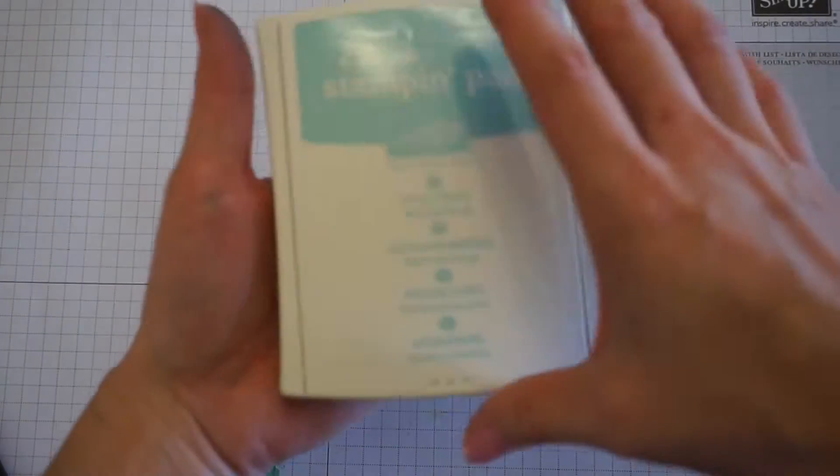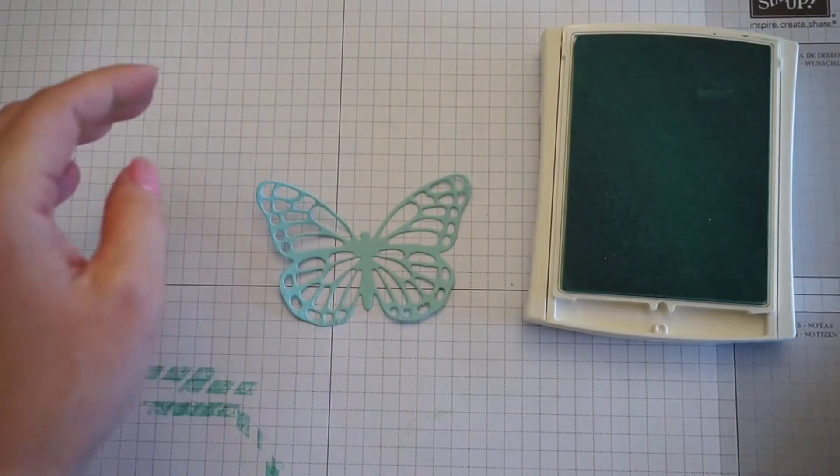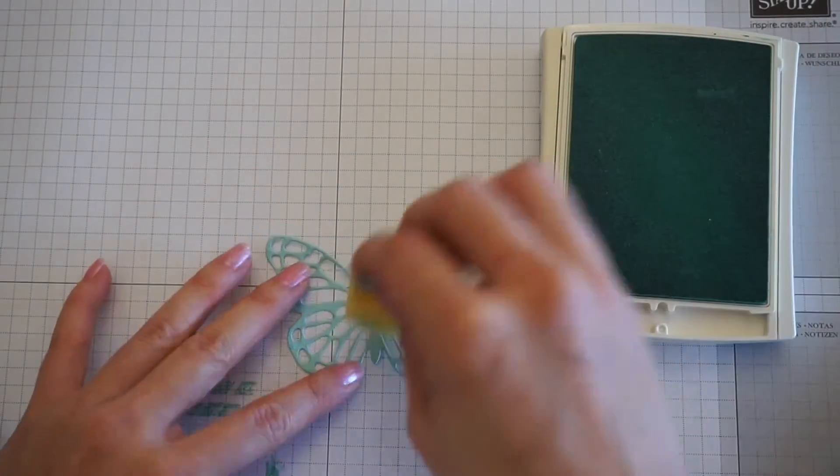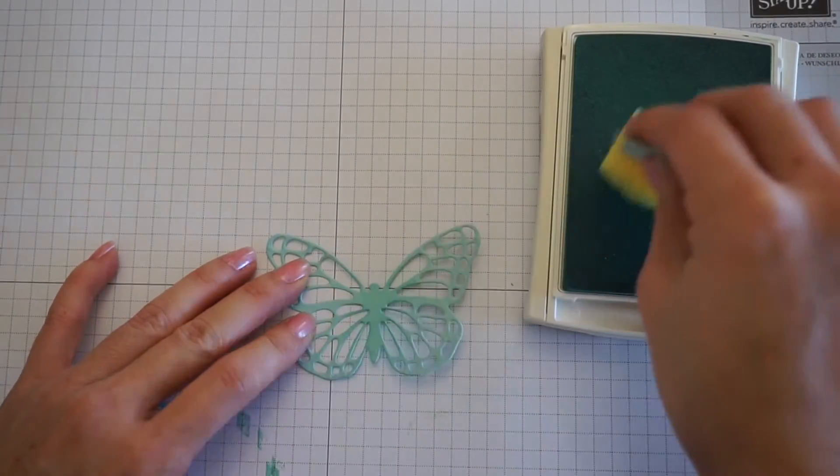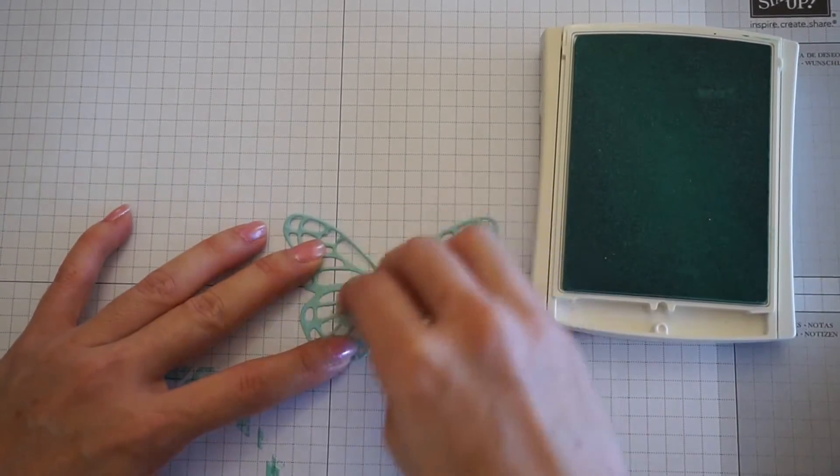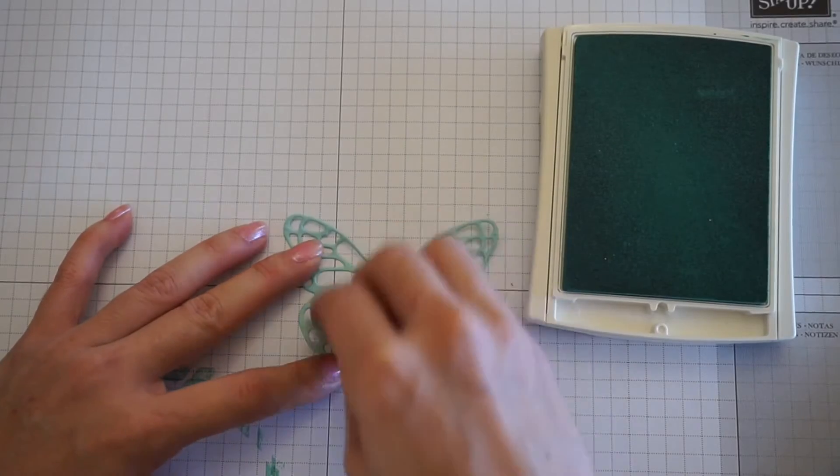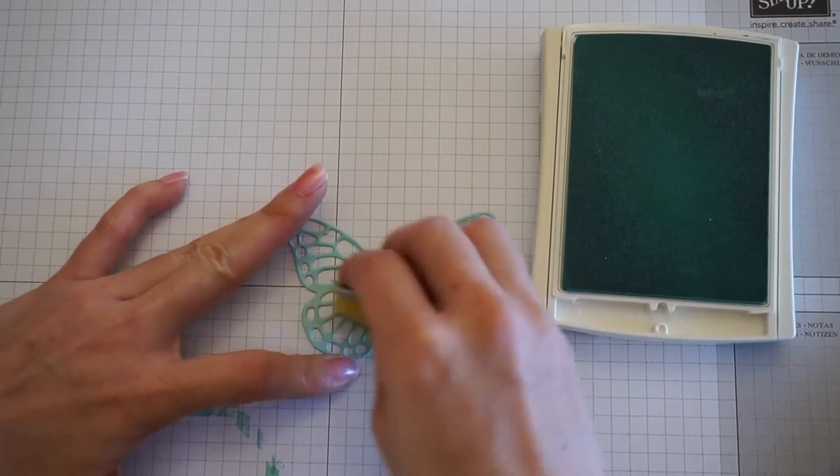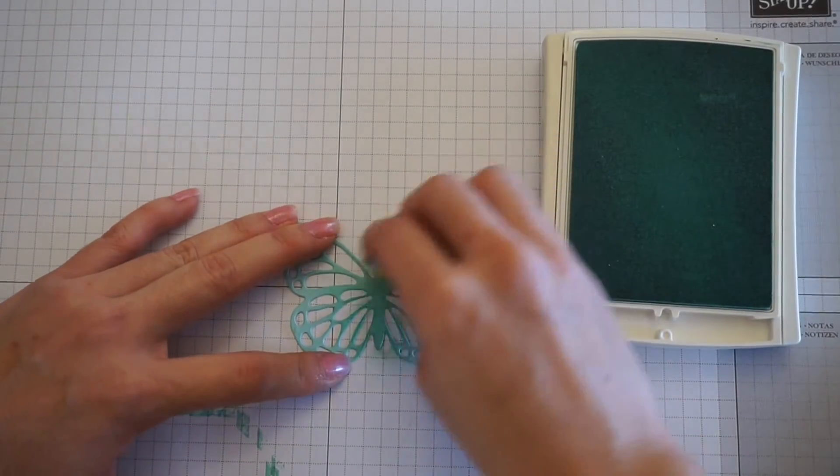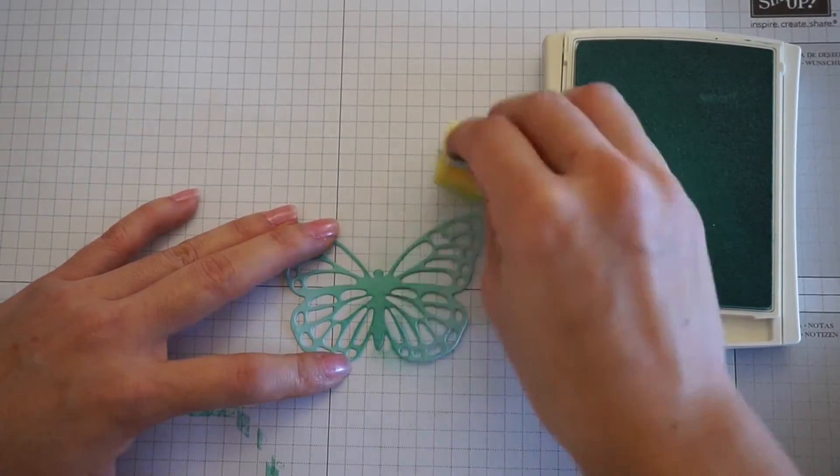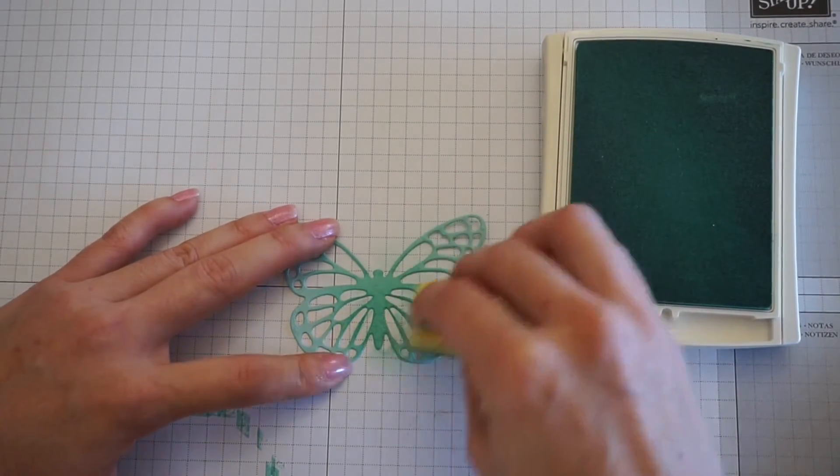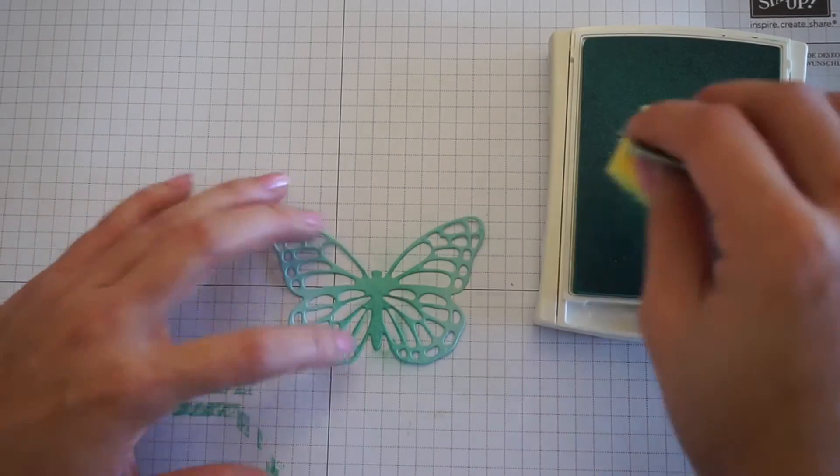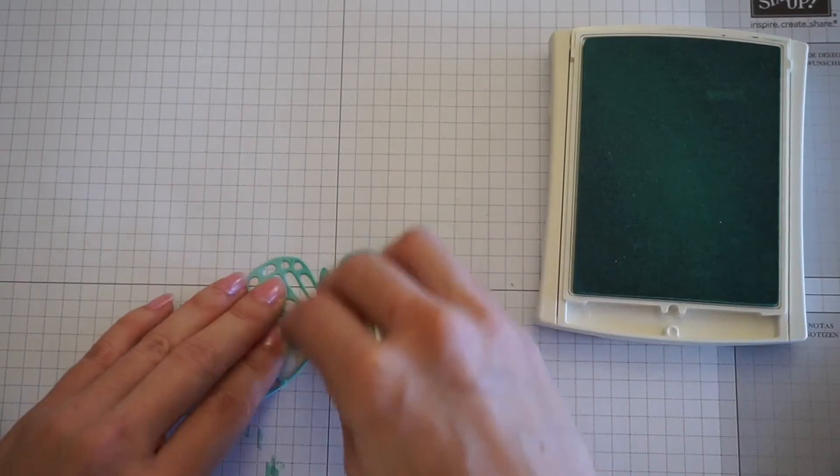Then what I did was I got pool party ink and a sponge. You can kind of dab it or swirl it around. Give me the edges. I left the edges a little lighter. It's kind of darker in the middle and lighter on the edges.